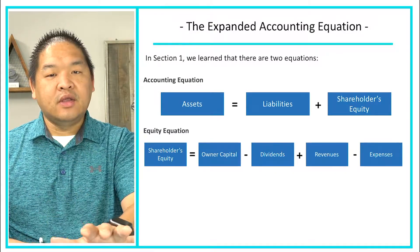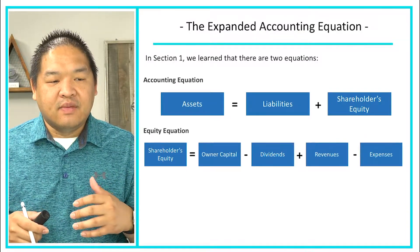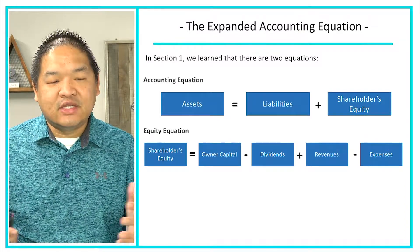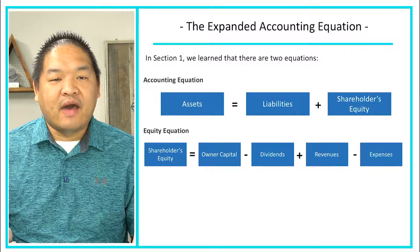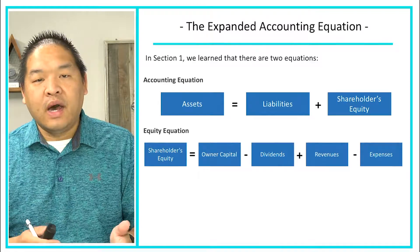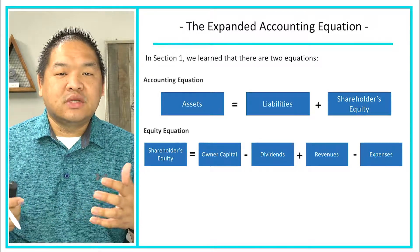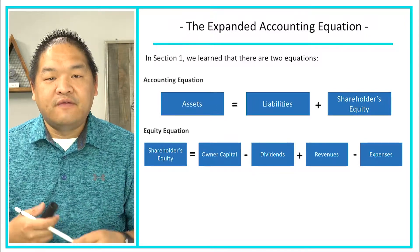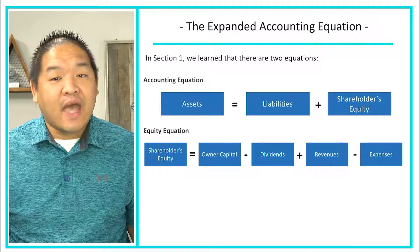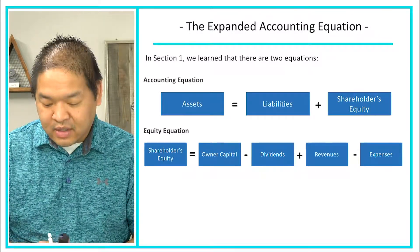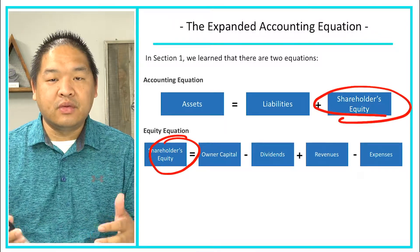If you remember grade school, we learned how to take two equations and combine them into one by finding like terms or like variables. If you look at these two equations, we actually have a like variable: stockholders equity appears in both equations.